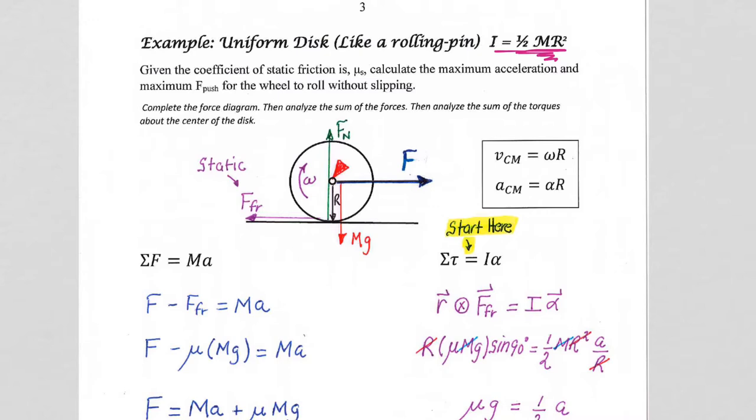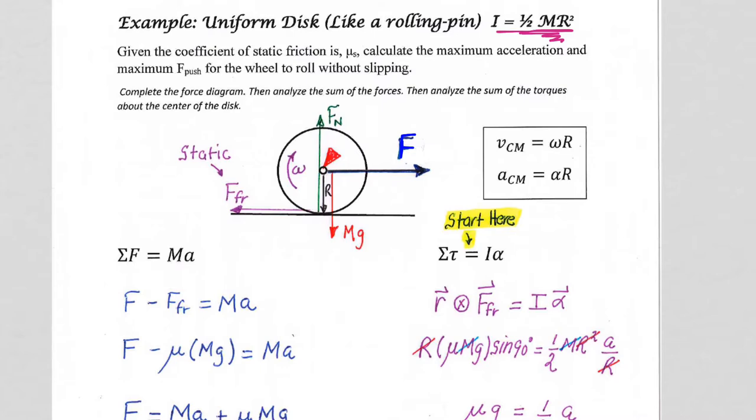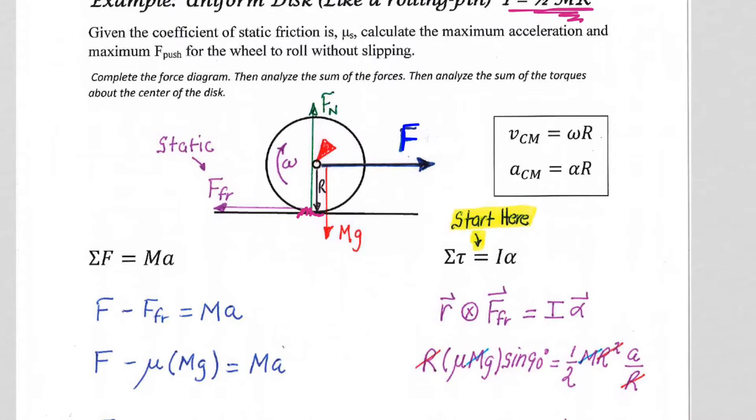Again, as it says here, like a rolling pin, and you're going to push it like you would push a rolling pin along the axle and push forward. And this disc will roll without slipping as long as there is enough friction, static friction, between the base of the wheel and the table to allow it to roll without slipping.